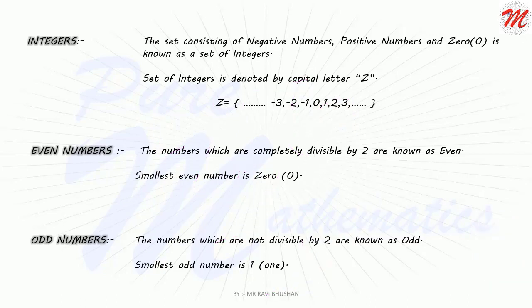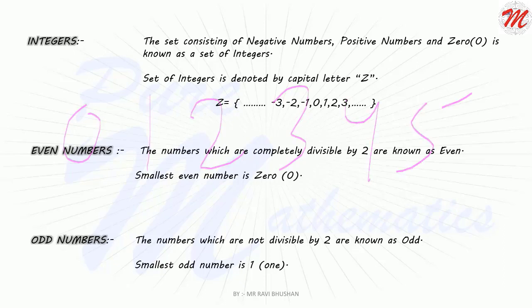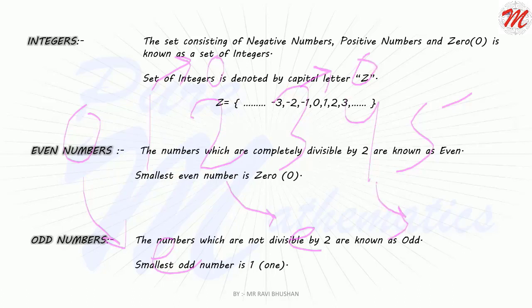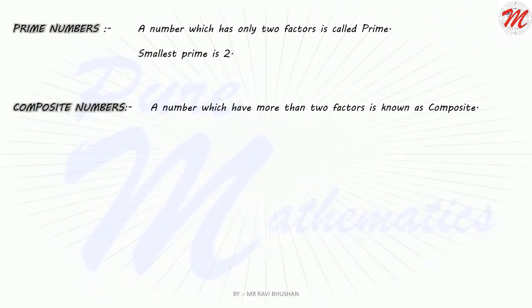We can say that if a number in the set of whole numbers is not even, then it is an odd number. In consecutive numbers such as 0, 1, 2, 3, 4, 5 — we see the pattern: if the first number is even, then the second is odd; the third is even, the fourth is odd; the fifth is even, the sixth is odd. Odd and even numbers alternate consecutively with each other.